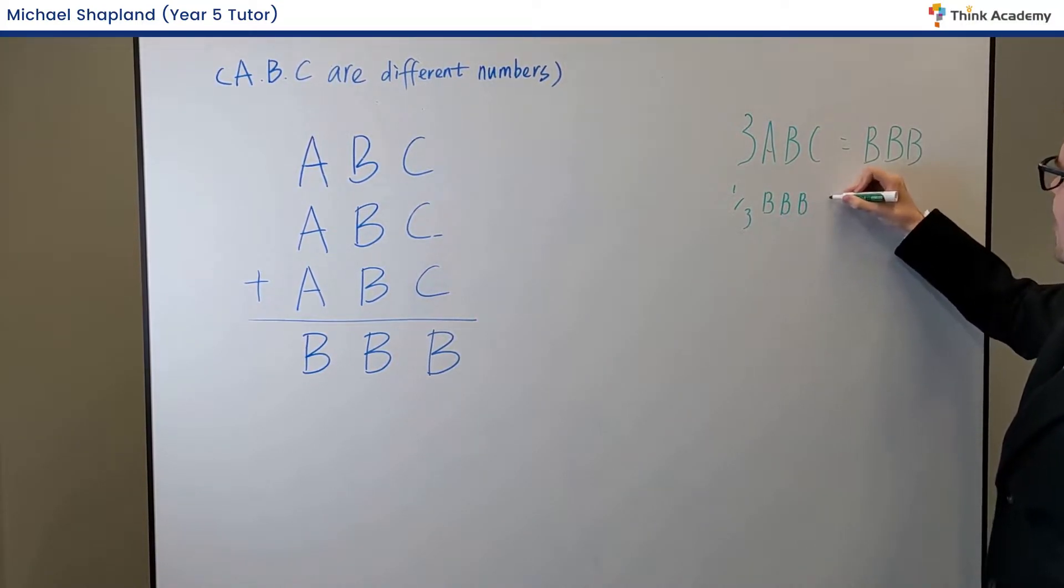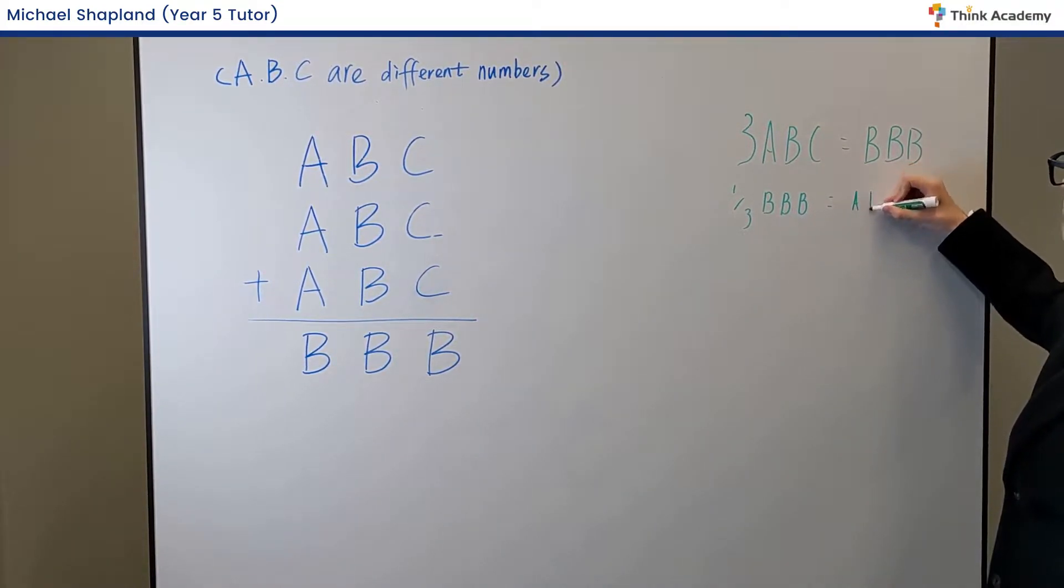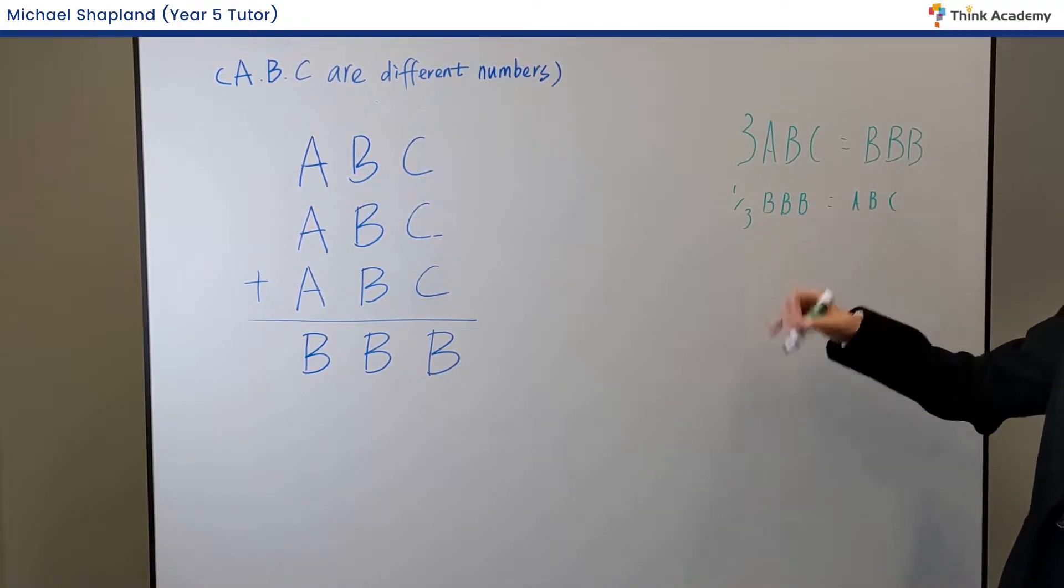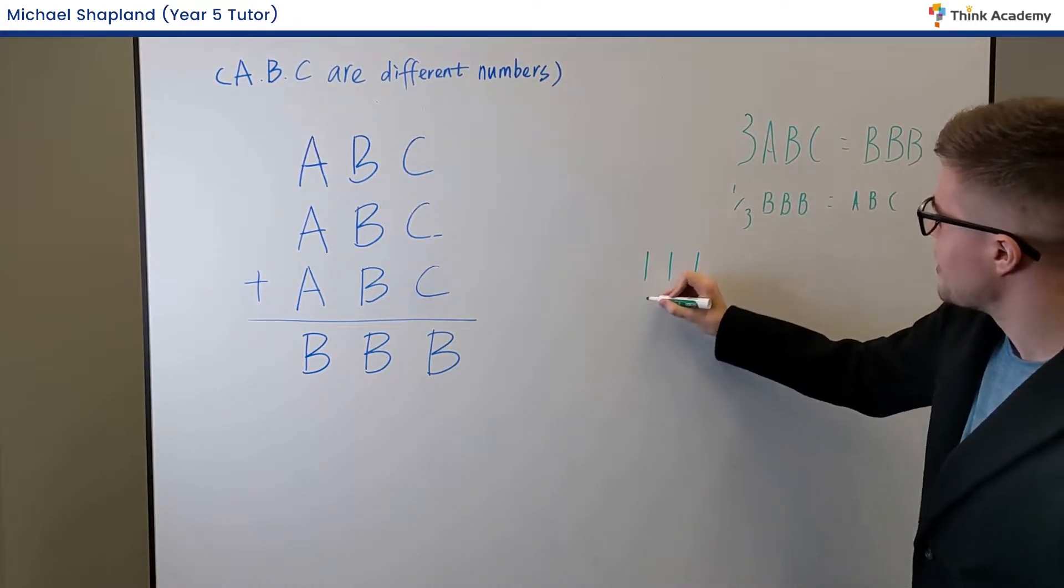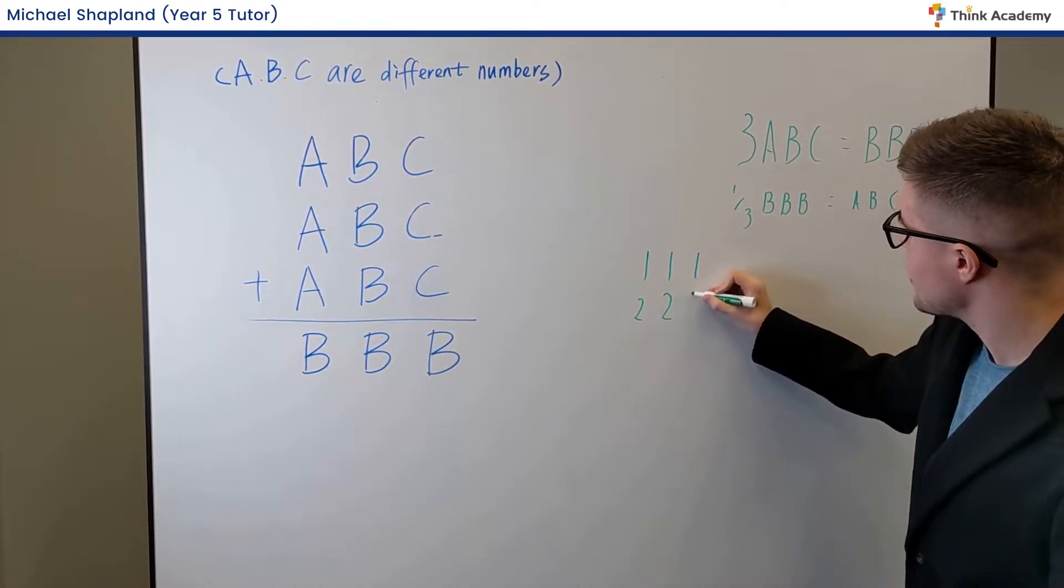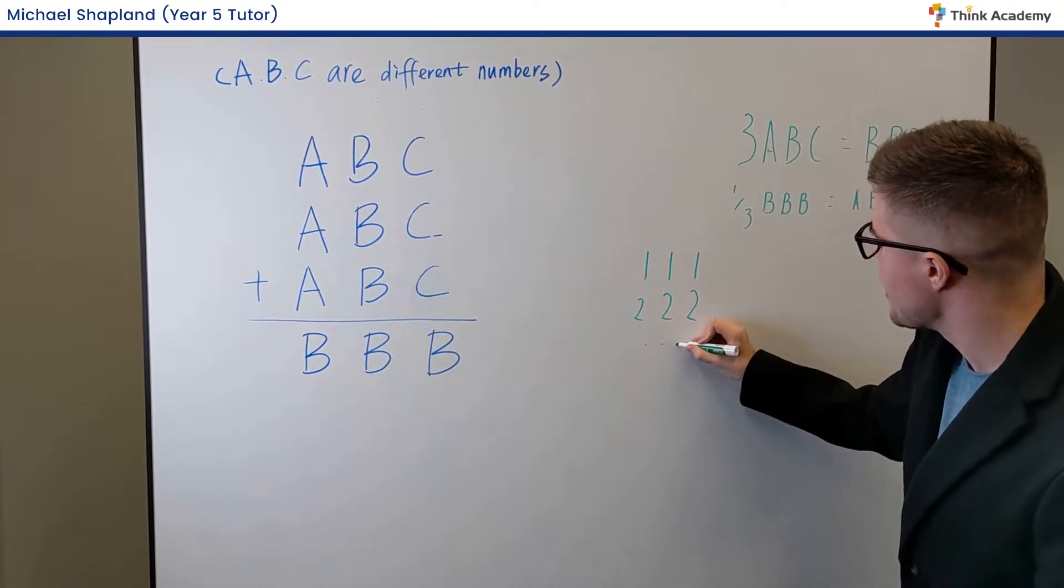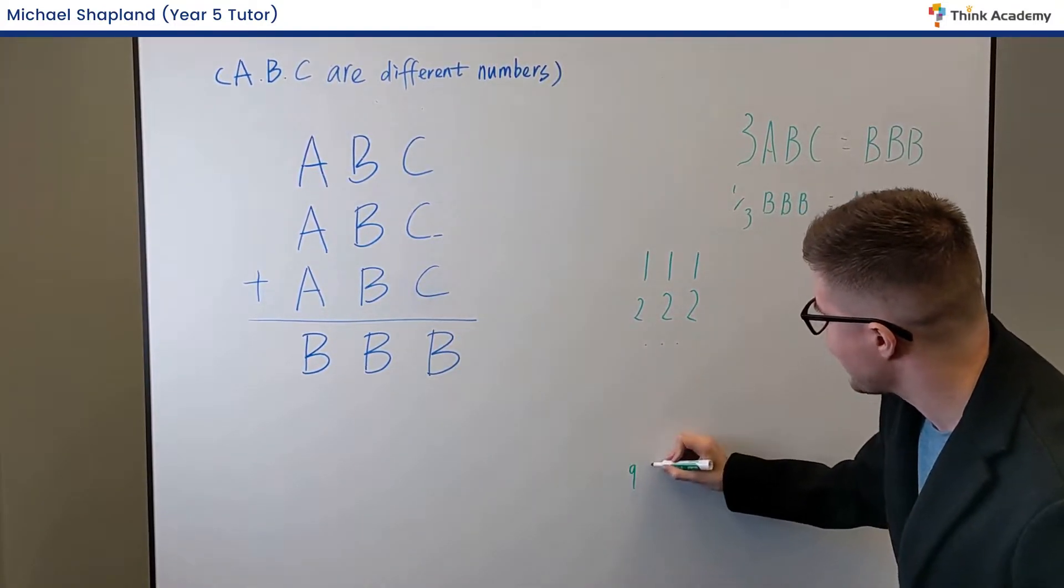So what does this give us for BBB? Well, there can only actually be nine numbers that BBB will be: 111, 222, all the way down to 999.